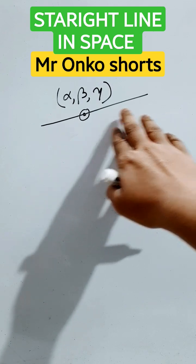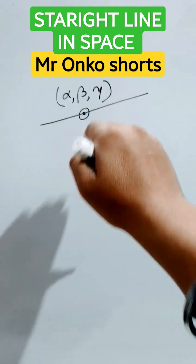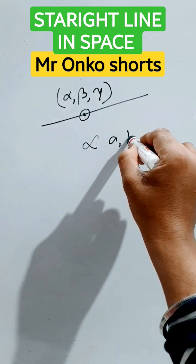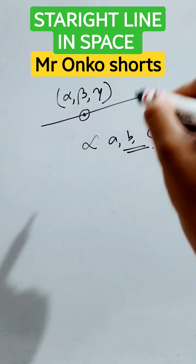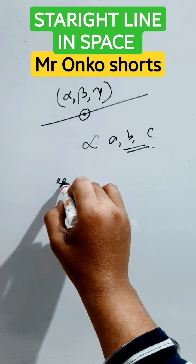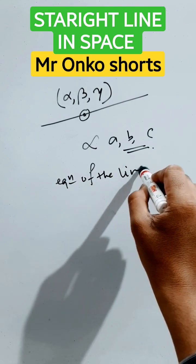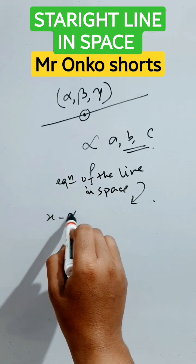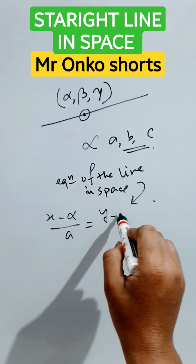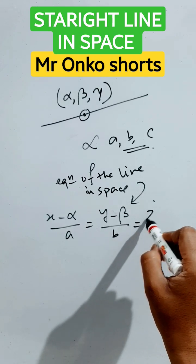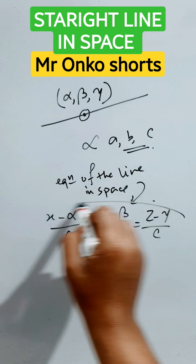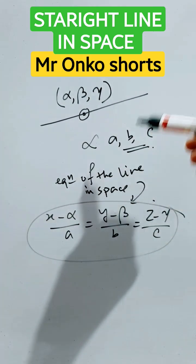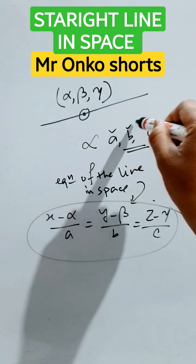This is a straight line in space, and this line is passing through (alpha, beta, gamma), and this line's direction ratios are proportional to A, B, and C. If these two conditions are given, then the equation of the line in space will be: (x - alpha) / A = (y - beta) / B = (z - gamma) / C. This is the equation of the straight line in space passing through (alpha, beta, gamma) and its direction ratios are proportional to A, B, and C.